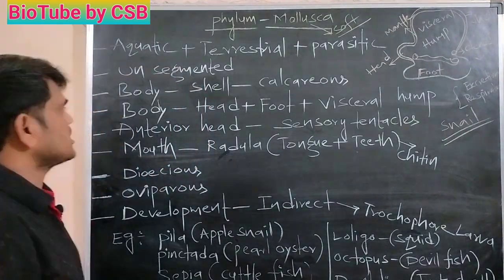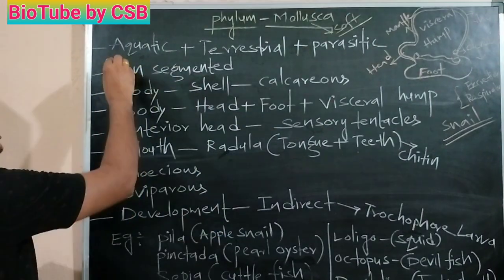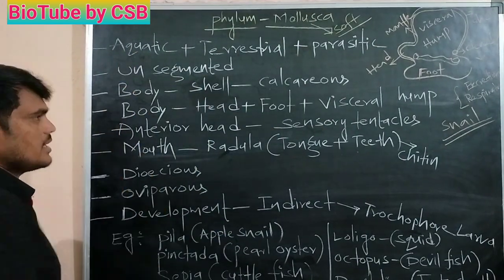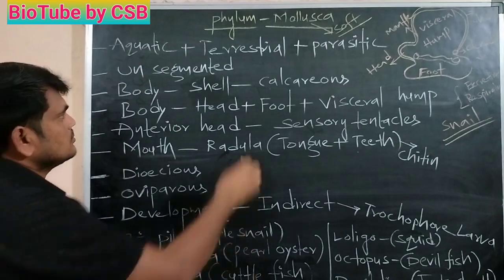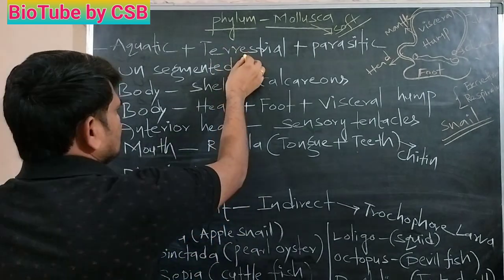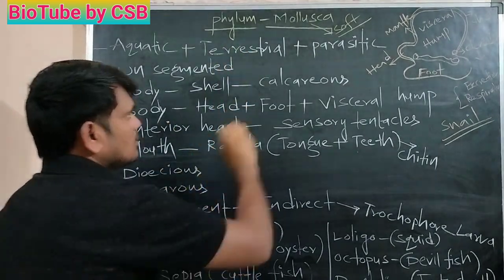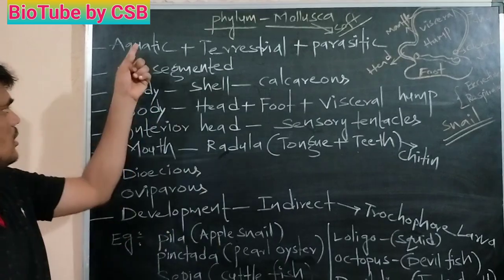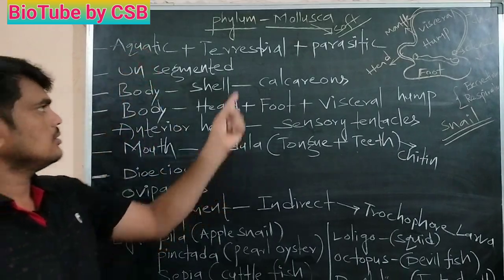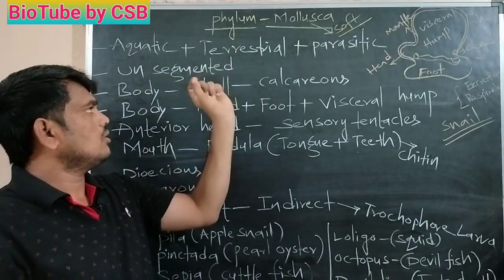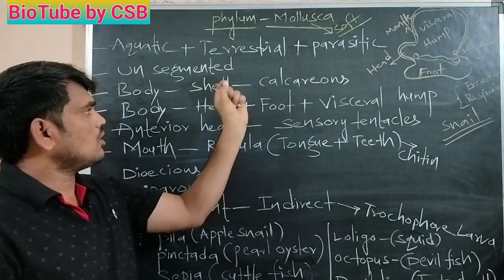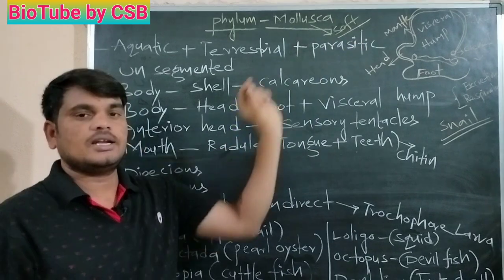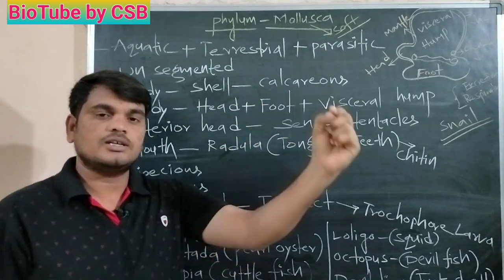Let me explain one by one. First, these are aquatic, terrestrial, and parasitic organisms — they live in water, live on earth or inside the soil, or parasitically inside a host body.